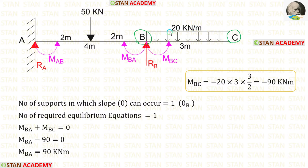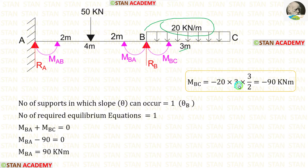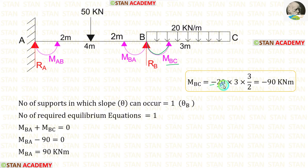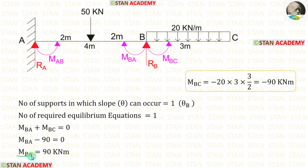To calculate the moment at point B from point C, we have to multiply the UDL with the distance and distance by 2. Since MBC is acting in the anti-clockwise direction, we add a negative sign with the load, giving us a negative moment. Applying the value of MBC and rearranging, we can calculate MBA, which is equal to 90 kNm. This is our equilibrium equation.